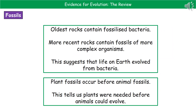If we take a look at some of the oldest rocks, inside there we only find fossilised bacteria, whereas in more recent rocks we've got fossils of more complex organisms. This suggests that life on earth actually all evolved from these single-cell bacteria at some point in the distant past. We also notice that plant fossils actually occur before animal fossils, which tells us that before animals could evolve we needed plants - and that links into the fact that plants produce the oxygen which the animals then need to breathe.